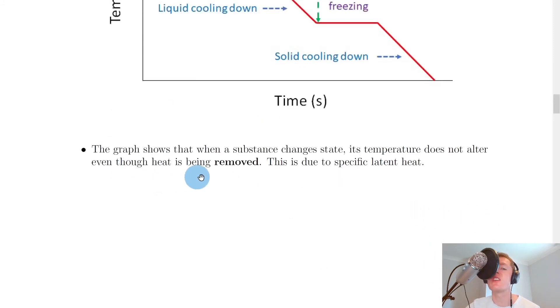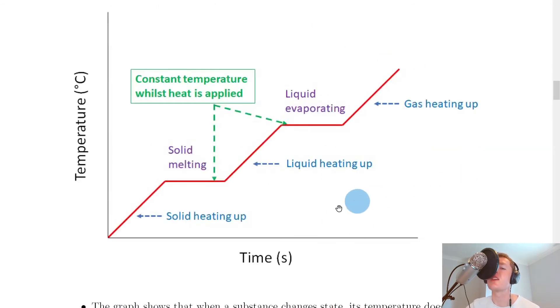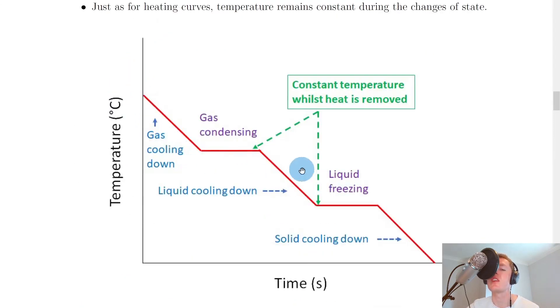The graph shows that when a substance changes state, its temperature does not alter even though heat is being removed — this is due to specific latent heat. For heating curves we've got a stepping upward pattern, whereas for cooling curves we've got a stepping downward pattern. For both, the important point is that during a change in state, the temperature remains constant. That's all for this video folks, thanks for watching. Make sure to give the video a like, subscribe to the channel, and I'll see you in the next one. Take care.